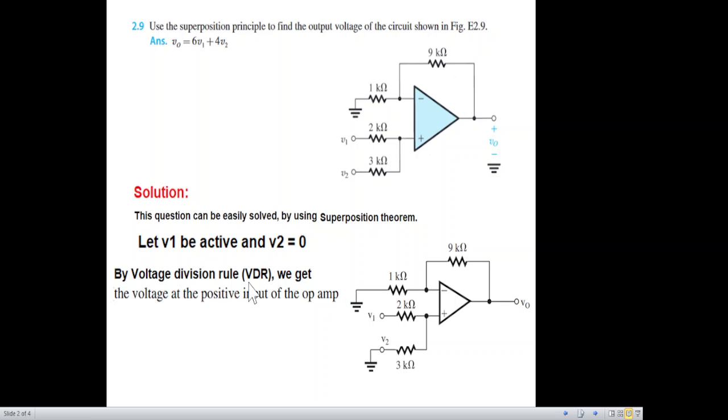By voltage divider rule, VDR, we get the voltage at the positive input of the op amp. So we want to find the input voltage here. We'll use VDR from v1. The formula is that the output or the result is...